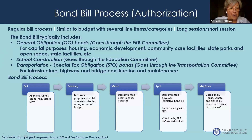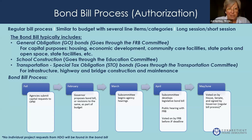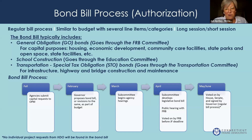The bond bill process starts in the fall where agencies submit capital requests to OPM. At the start of session in February, in the long session, the governor proposes the bond bill or revisions to those capital requests as part of the budget. In March, the subcommittee starts meeting and holds agency hearings. In April, the subcommittee develops a legislative bond bill and submits it to the full Finance Committee, which holds a public hearing and votes. In May and June, the bond bill goes to the House and Senate floors and is passed, with continual negotiations to the end.